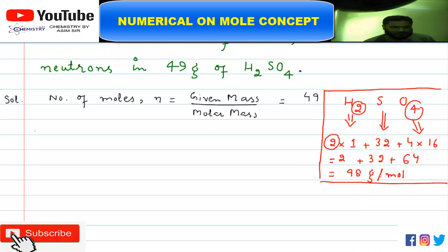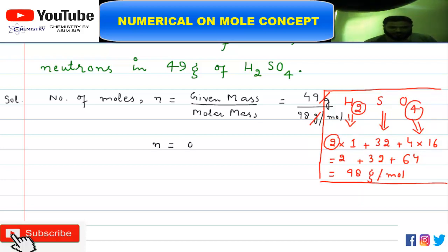Now substituting into our formula: given mass is 49 grams divided by molar mass of sulfuric acid, which is 98 grams per mole. The grams cancel out and we get n = 49/98 = 0.5 moles. So we have calculated the first part — 49 grams of sulfuric acid contains 0.5 moles.